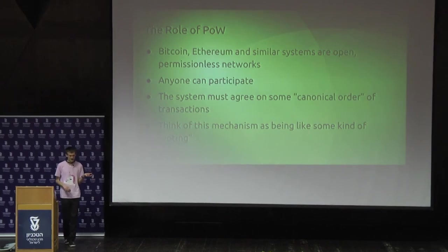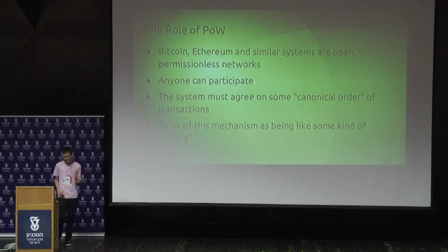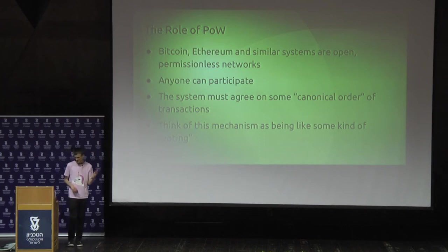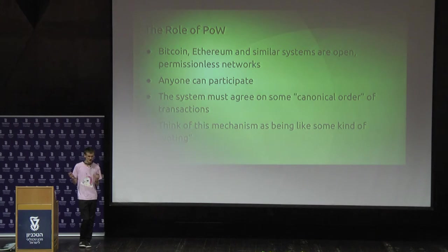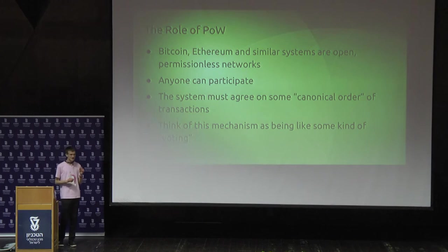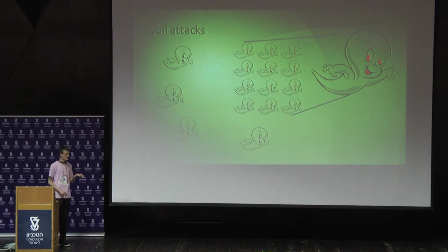Proof of work is part of the solution that deals with that problem specifically. A blockchain has to agree on some canonical order of transactions — this happened first, then this, then this. You can think of the agreement as a kind of voting. People vote on what the order of transactions is. But if you have voting, then you need some way of counting who's eligible to vote, and so the problem you have is something called a Sybil attack.